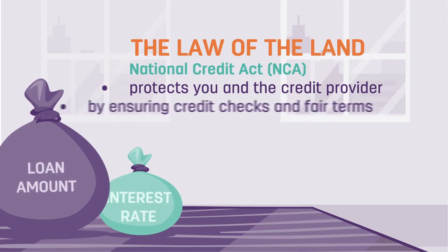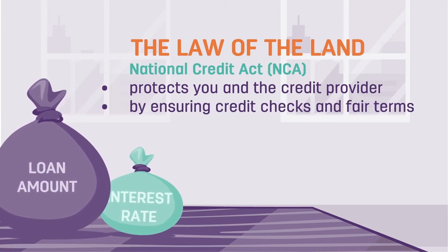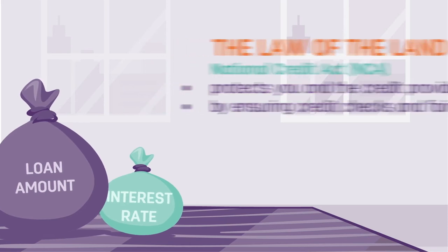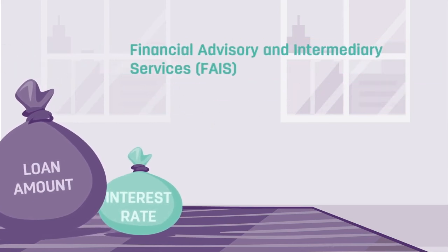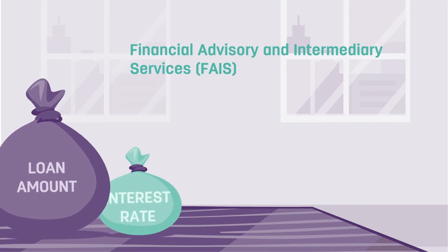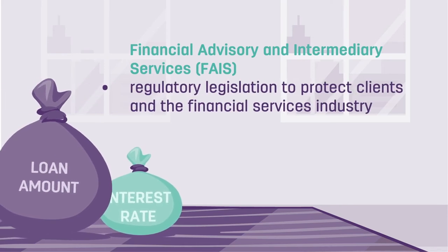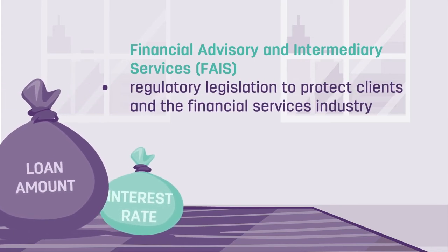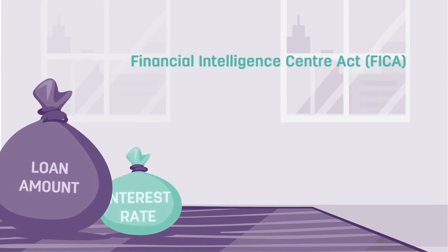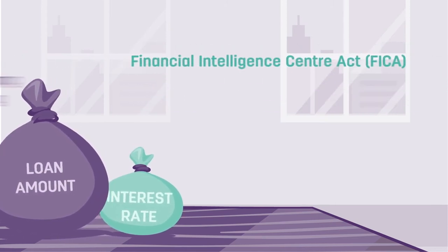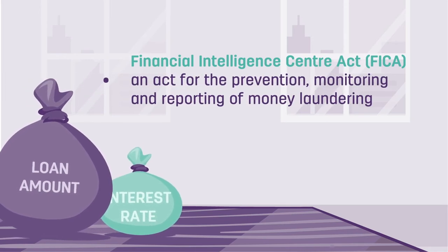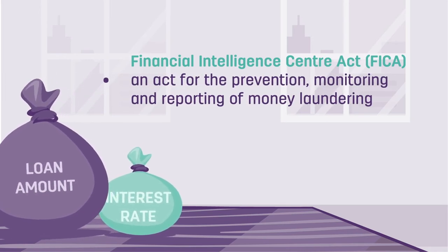The National Credit Act ensures credit checks to make sure that you can afford the loan and fair terms. FAIS, which stands for Financial Advisory and Intermediary Services, is regulatory legislation protecting the financial services industry and their clients. FICA, which stands for Financial Intelligence Centre Act, is an act for the prevention, monitoring, and reporting of money laundering through various methods.